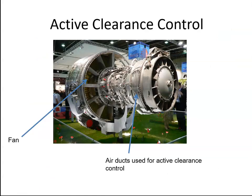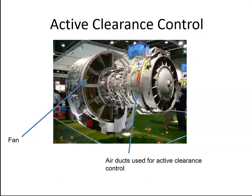Here's an example of an engine, and you can make out the pipes that are taking the bleed air. They help control the tip clearance. This is an example of active clearance control.